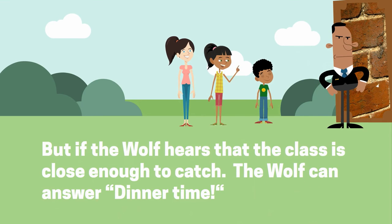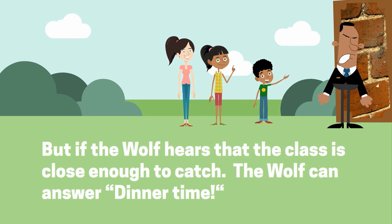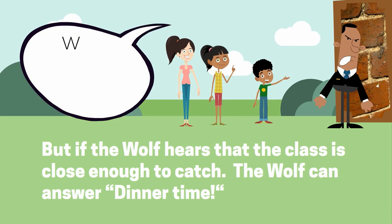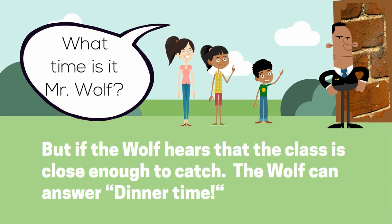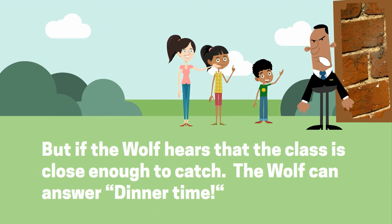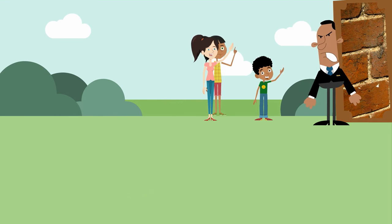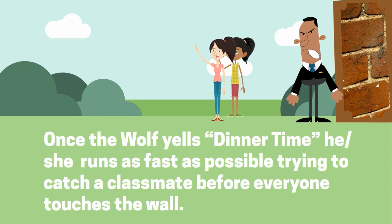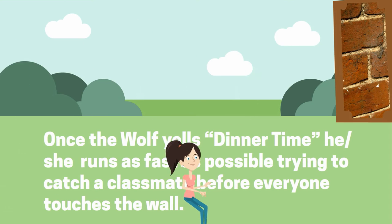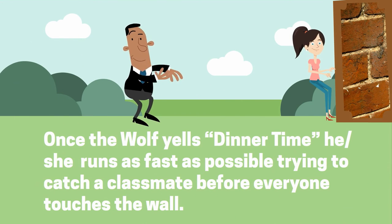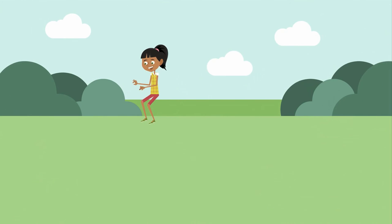But if the wolf hears that the class is close enough to catch, when the class uses the target question 'What time is it Mr. Wolf?', the wolf can answer 'dinner time.' Once the wolf yells dinner time, he or she turns around and runs as fast as they can trying to catch one of their classmates before everyone touches the wall where they are safe.